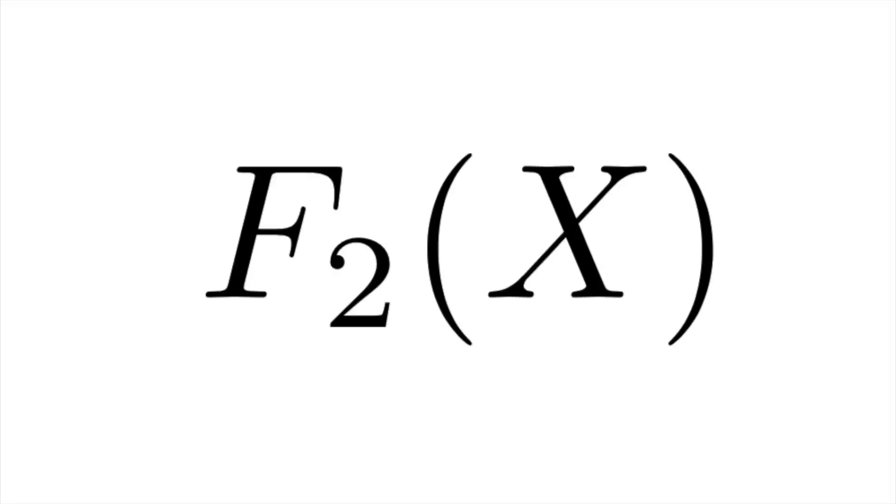A configuration space is what you get when you start with a shape and you consider configurations of two points, just any way you can pick two different points. This is called the configuration space of two points on our space, written like this, F2 of X.